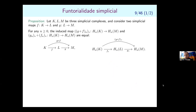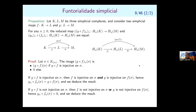Simplicial complexes form a category, and homology is a functor: you transform spaces, you transform maps, and you have the important functoriality property. If you have three spaces and two maps and consider their composition, the transformation of the composition equals the composition of the transformations.